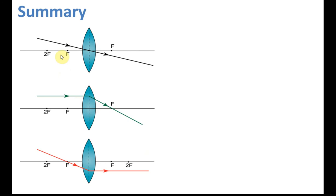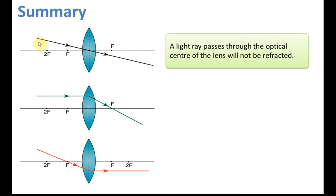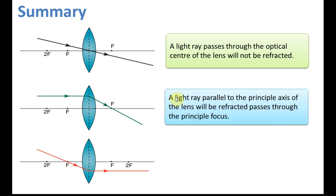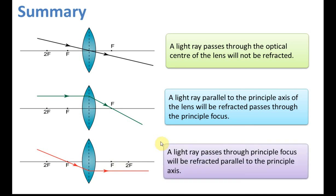Summary of the three rules: First, a light ray passing through the optical center will not be refracted. Second, a light ray parallel to the principal axis will be refracted through the principal focus. Third, a light ray passing through the principal focus will be refracted parallel to the principal axis. These are the three rules for drawing ray diagrams for a convex lens.